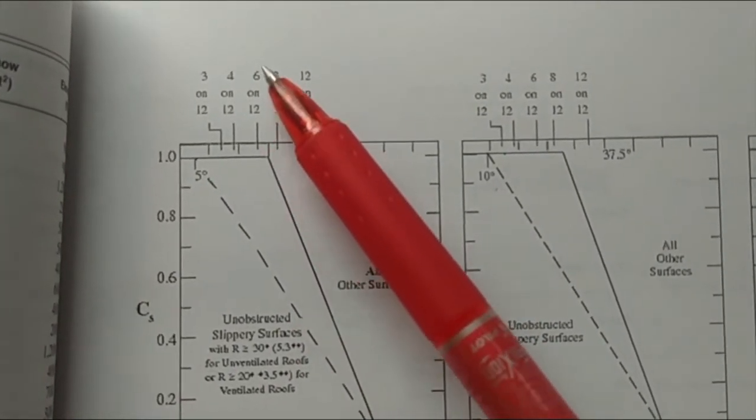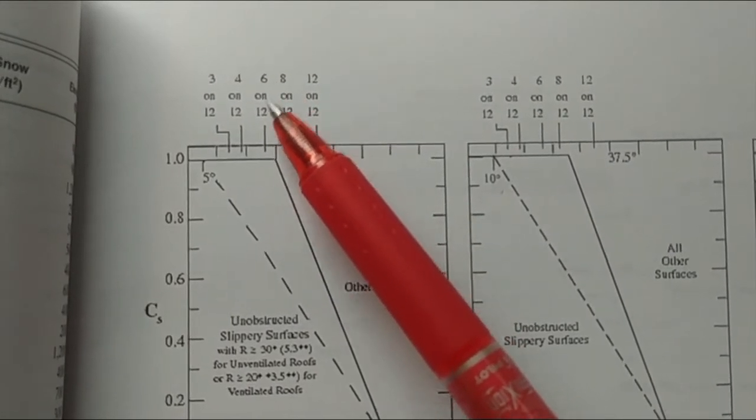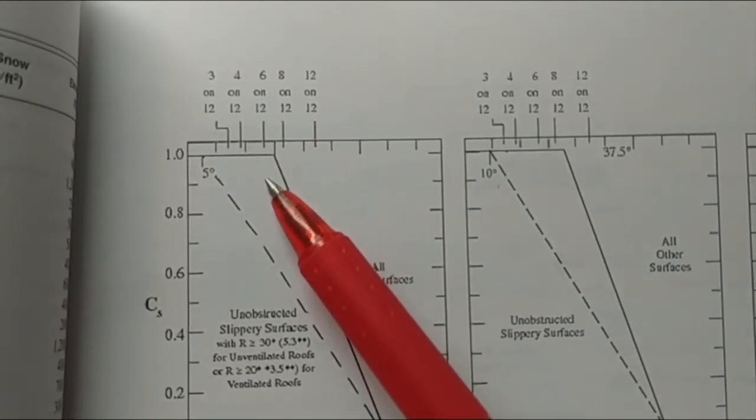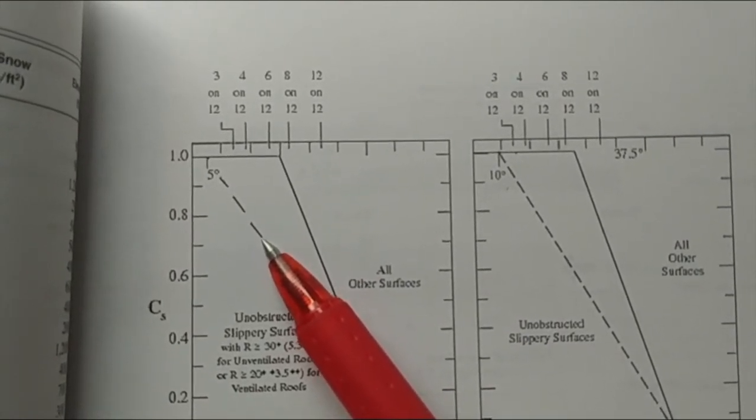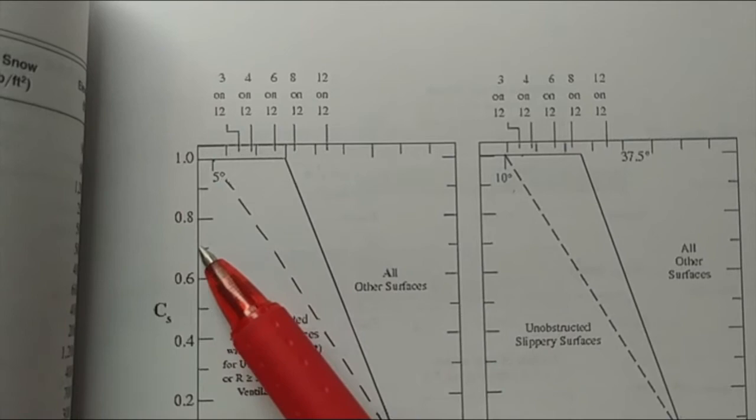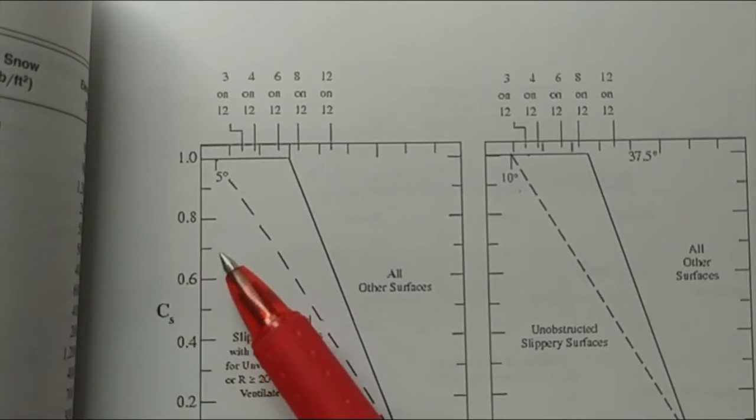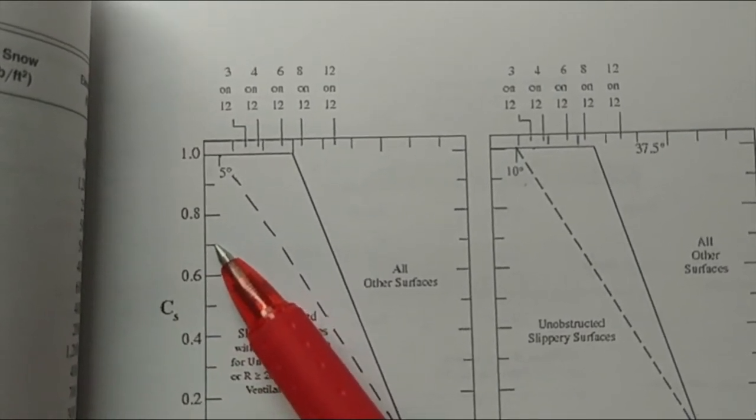We have the pitch of our roof, six on twelve, that's the pitch of our roof. The rise of six, run of 12, and that's going to fall down until we hit where we right here. So we hit our slope dashed line and we're going to go over and that'll be our C_S value. So our C_S value in this case is 0.7.